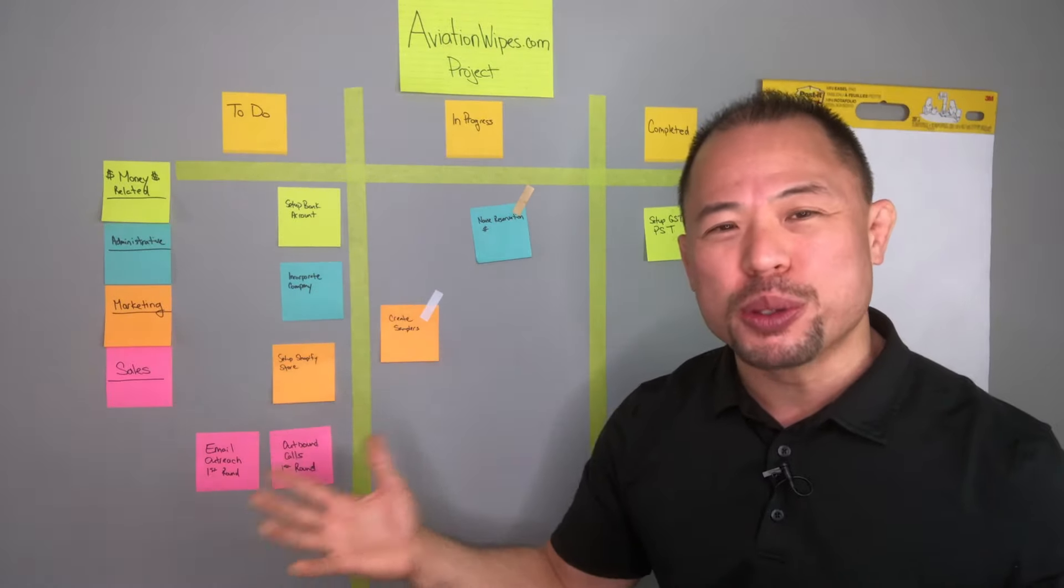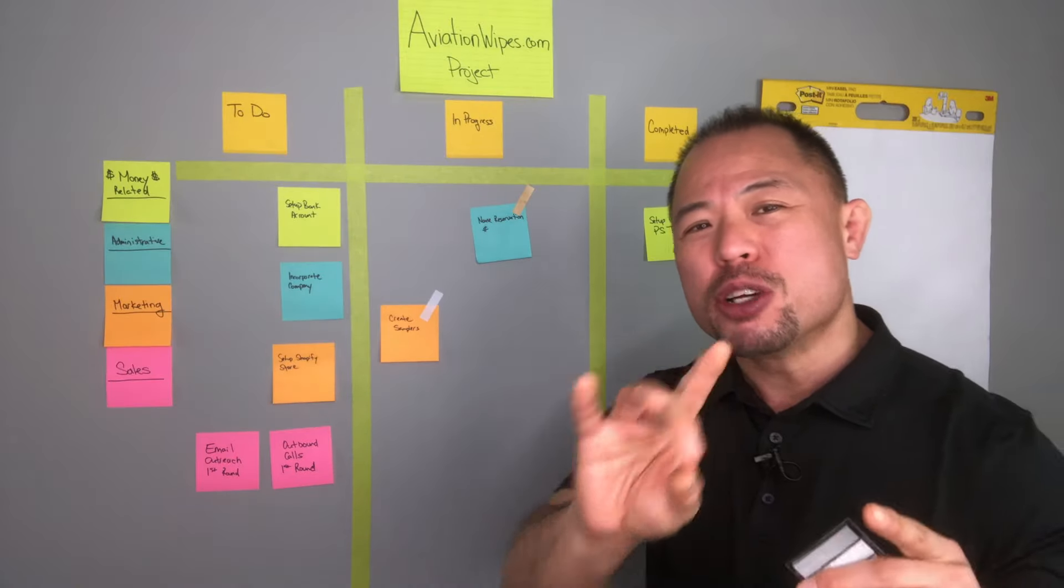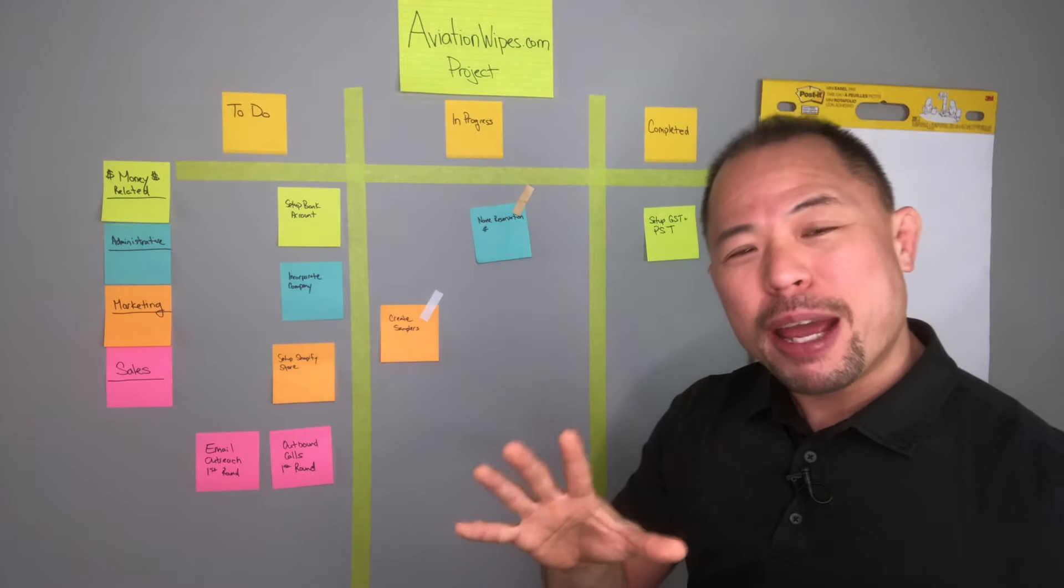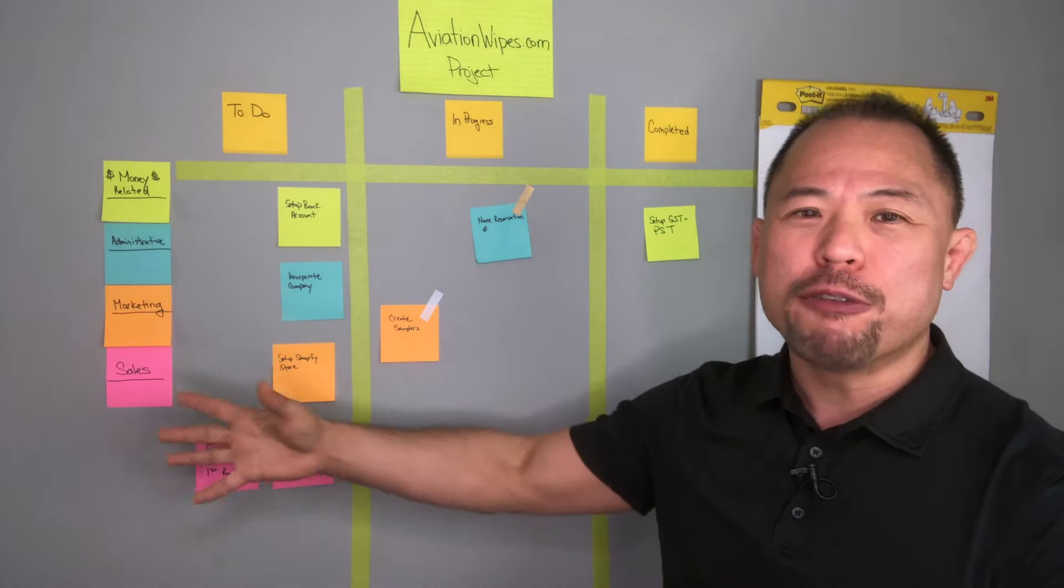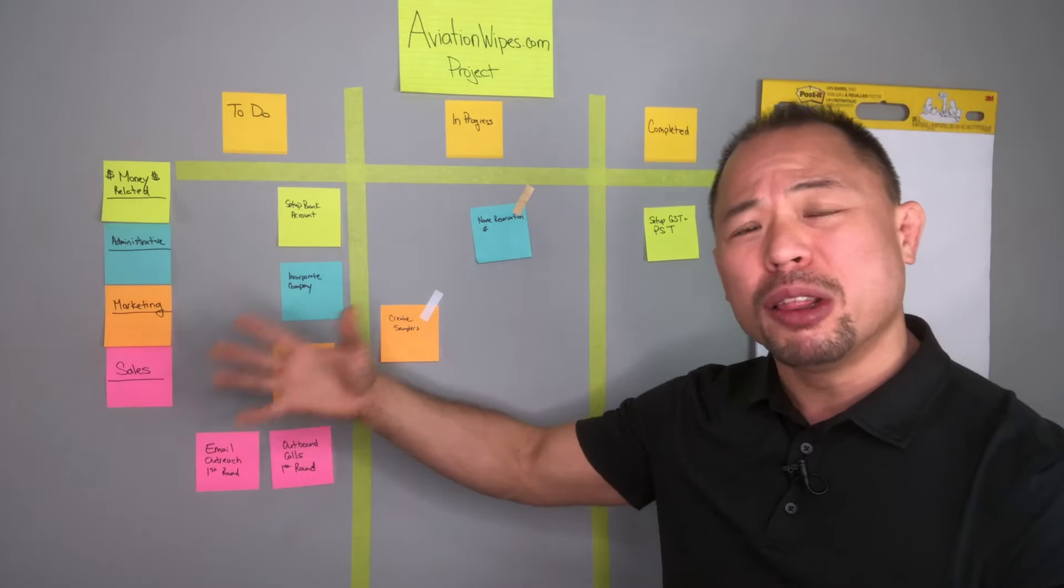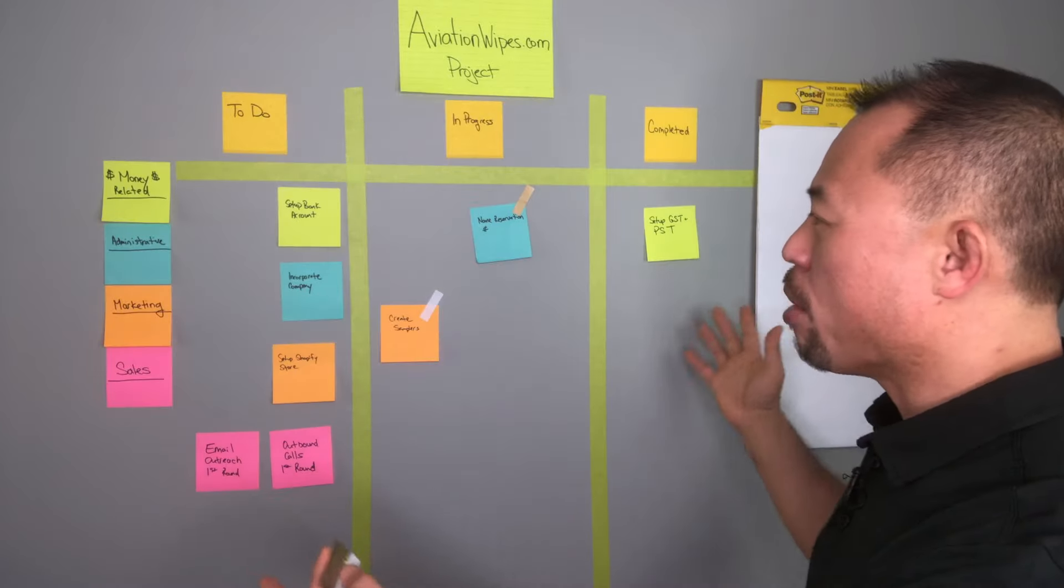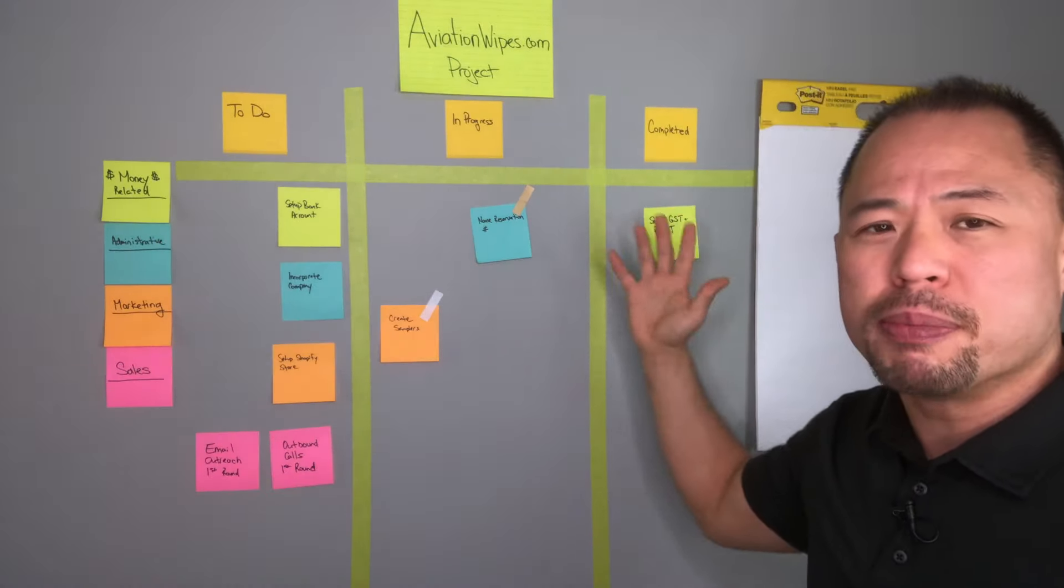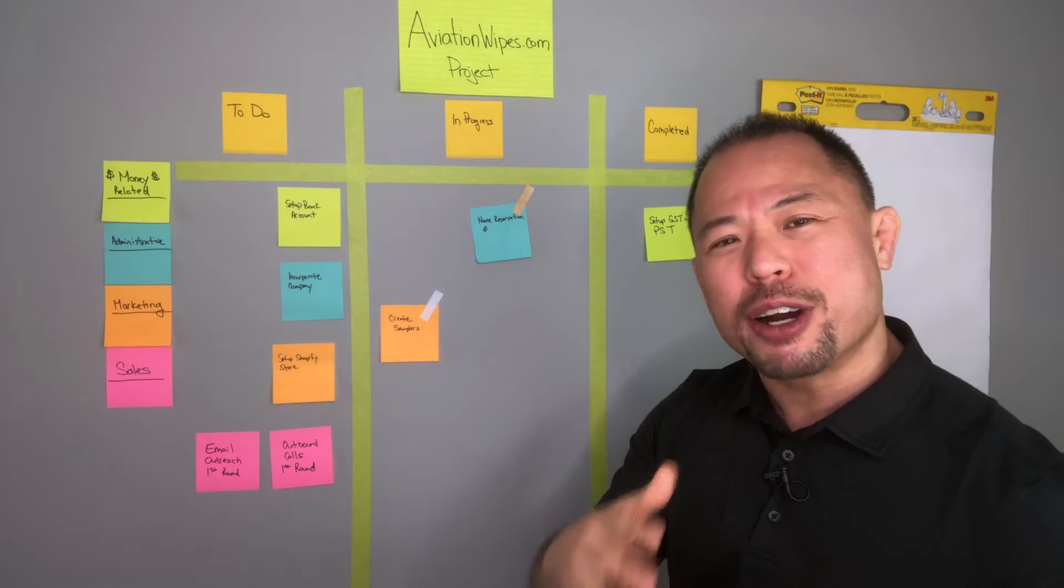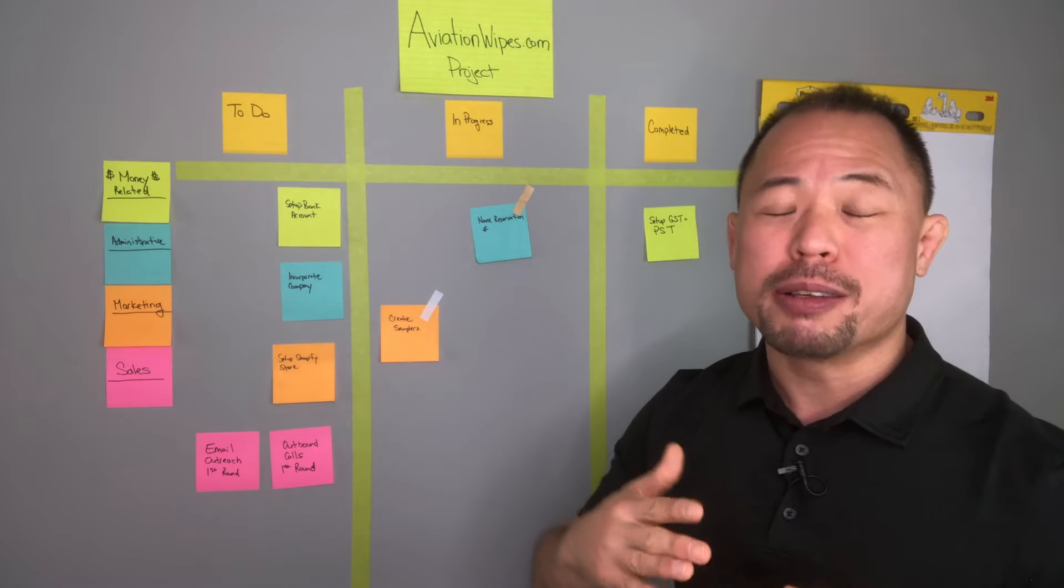Now, I know there's tons of software tools out there to manage projects, but here's why I like Kanban board. The Kanban board, when I walk into my office, it's in my face. I know how far I am in my project just by looking at the state of the project by how many post-it notes are in my to-do section versus my in-progress versus my completed. It's a visual reminder of how well my project is progressing.